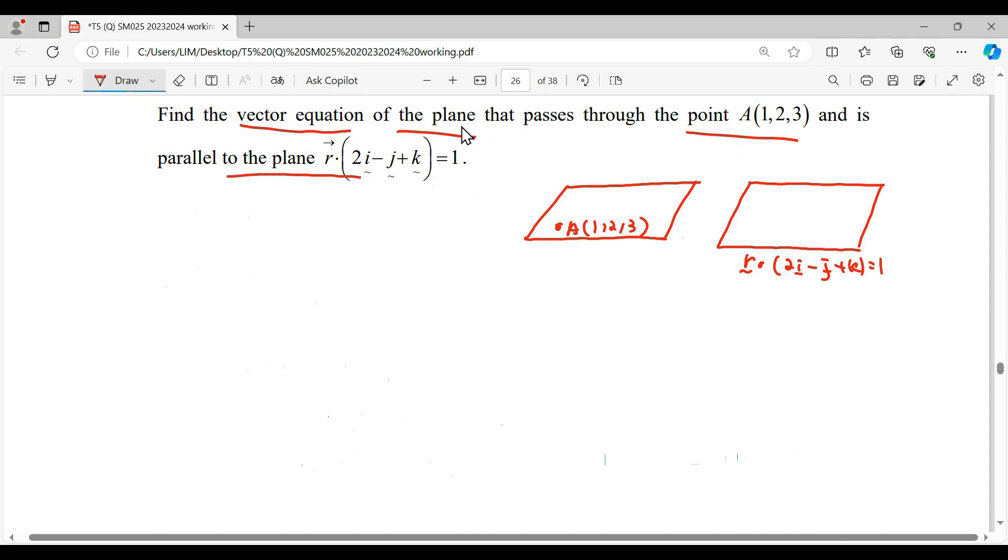To find the equation of the plane we need R·n = A·n. We need to identify what is our vector A and vector n in this equation. Vector A will be the position vector for the point where the plane passes through.